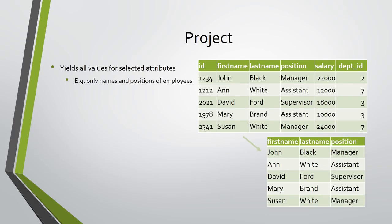The project operation yields as result only the columns of the specified attributes. For example, projecting only first name, last name, and position produces all employees but only with the three specified attributes.